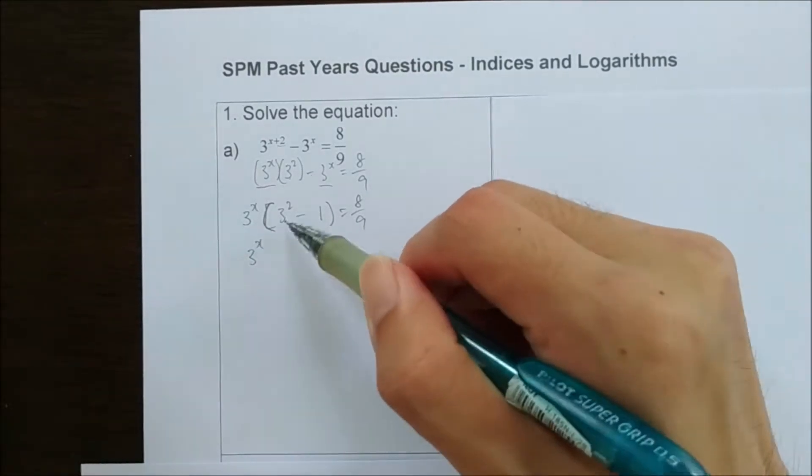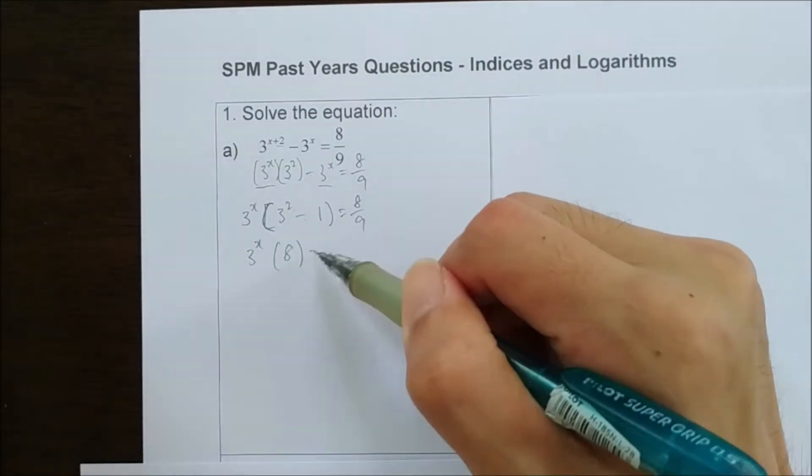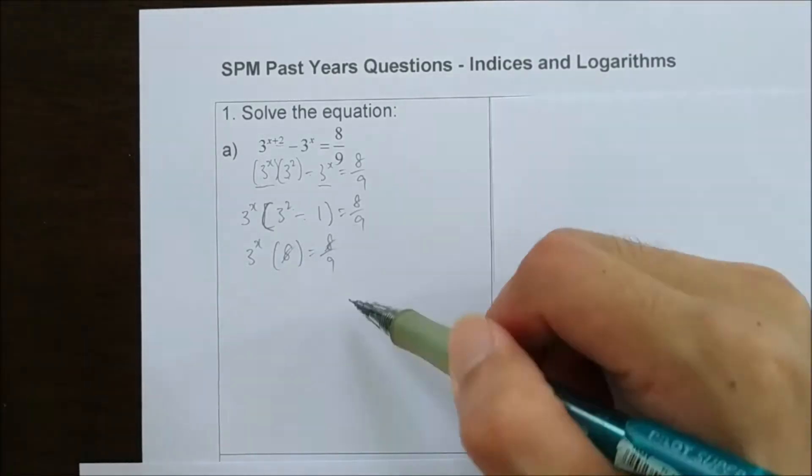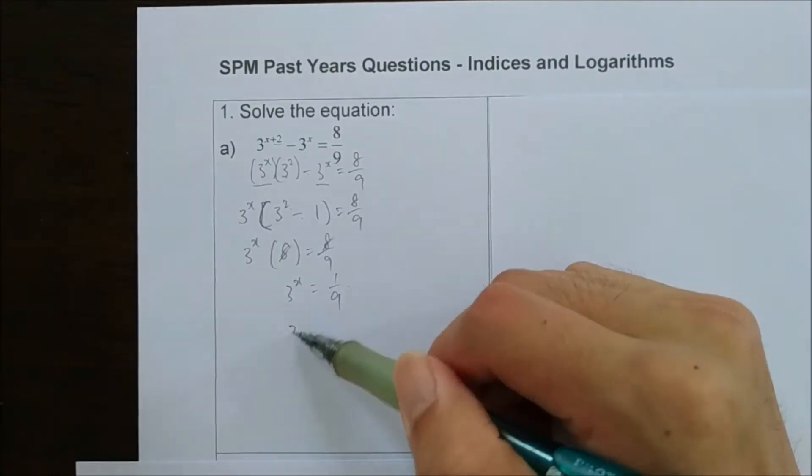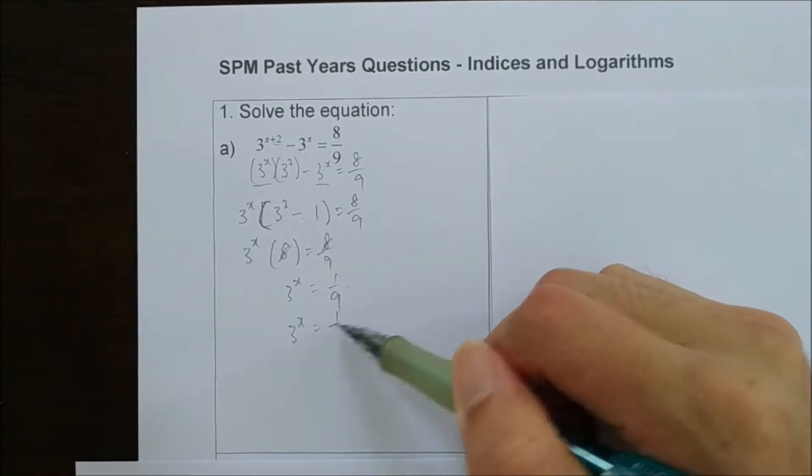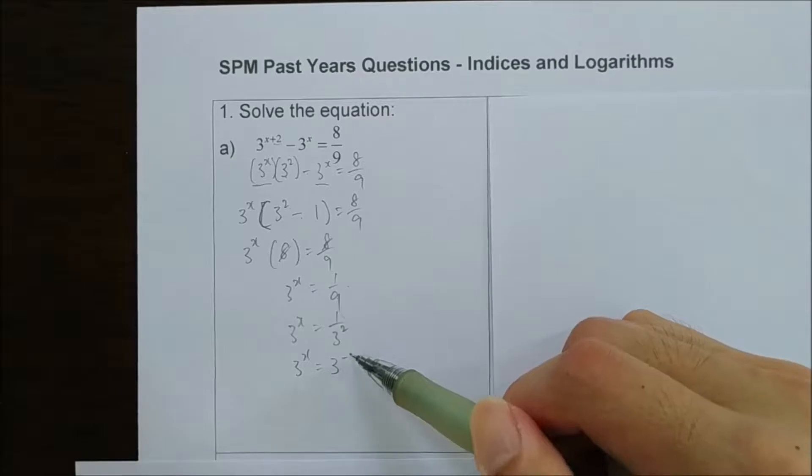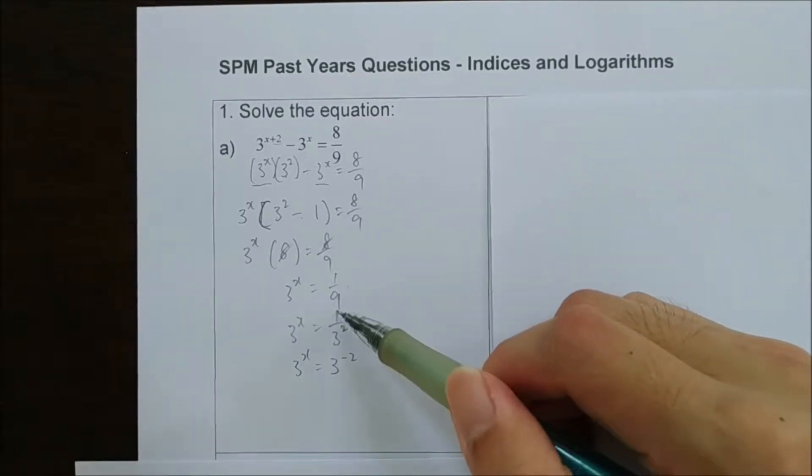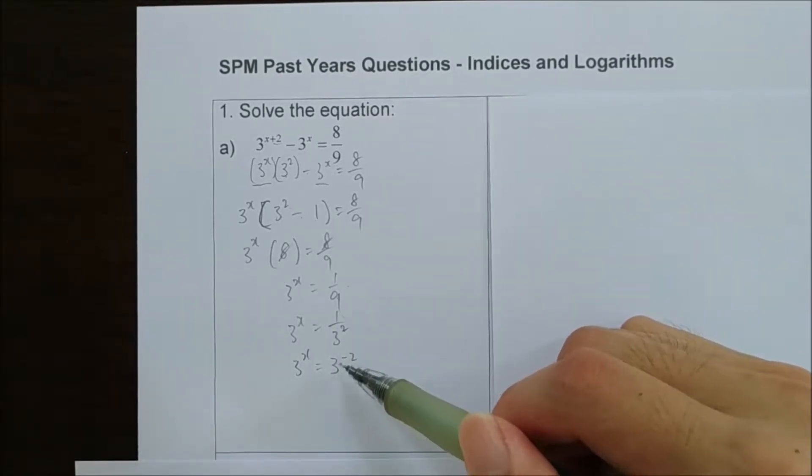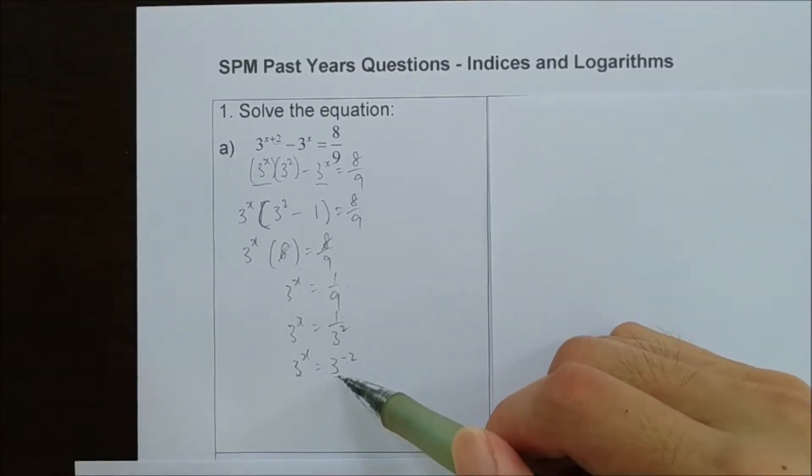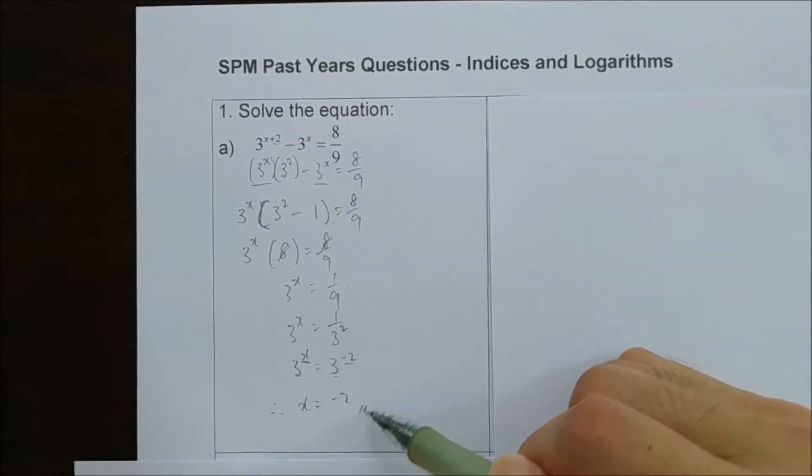Then we solve this. 3 to the power of 2 times 8 over 9 equals 8 over 9. We can show this in the form of 3 to the power of negative 2, since 1 over 3 to the power of 2 is equal to 3 to the power of negative 2. Hence, by comparison of the base number, x is equal to negative 2.